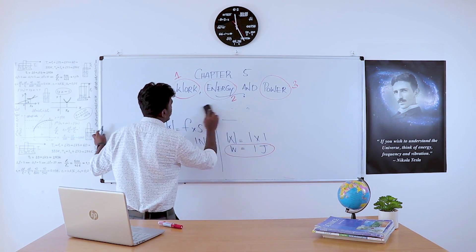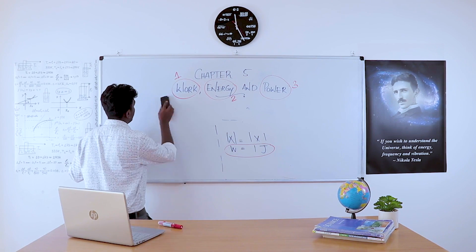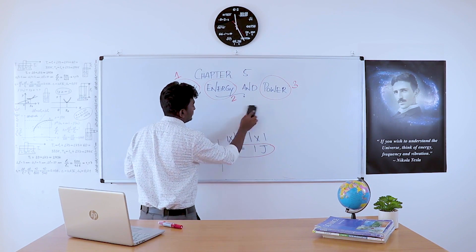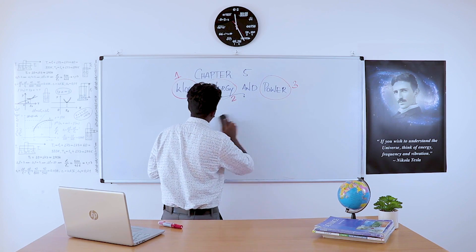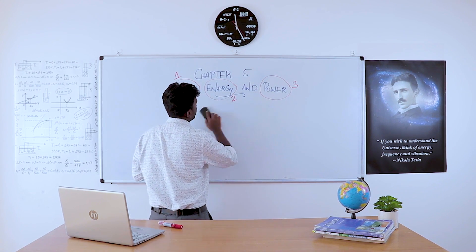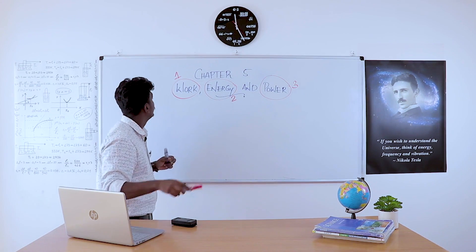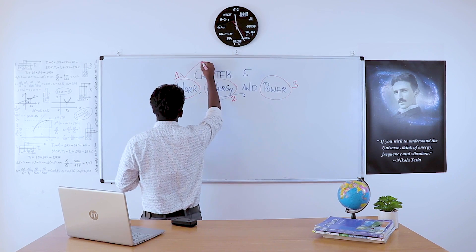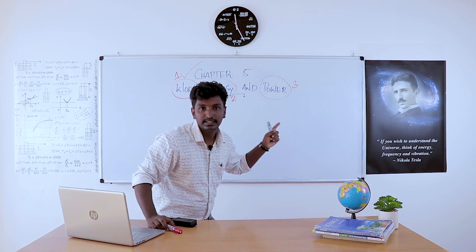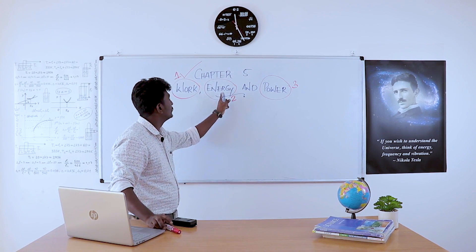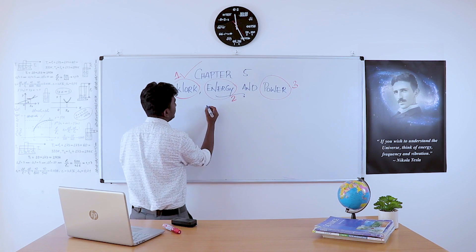That completes our first topic — work. In the first section we explained what work is, the classification of work as positive, negative, and zero work, the unit of work as Joule, and one Joule of work. Now moving to the second section, that is energy.